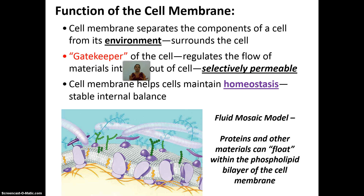The idea that things can float and move within the phospholipid bilayer is called the fluid mosaic model. Proteins and other materials can float within the phospholipid bilayer of the cell membrane, embedded within the flexible double membrane. It is a very fluid and flexible cell structure.